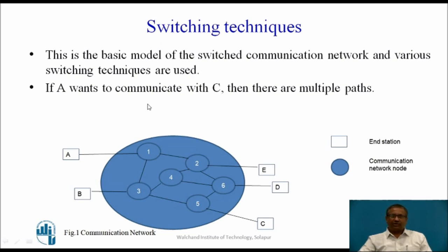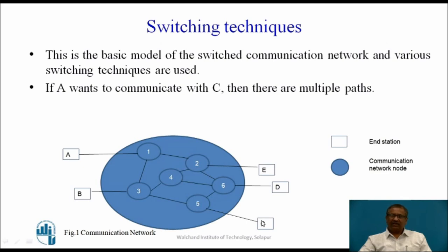For example, if A wants to communicate with C using this communication network, then which nodes are involved in that we can find out. There are multiple paths available, so the data can be transferred in different ways or different paths. One of the paths from station A goes to node 1, then node 2, then node 6, node 5, and then finally to C. So this is one of the paths.